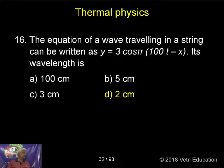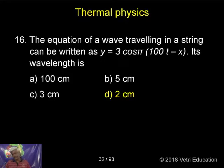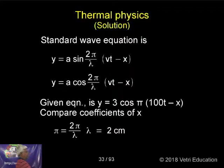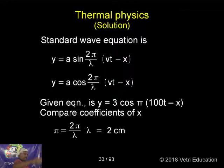The equation of a wave traveling in a string can be written as y equals something, and its wavelength is what we have to compare. The standard form is y equals a sine of 2 pi by lambda into vt minus x. We have to compare this, and for downward motion it becomes cosine.